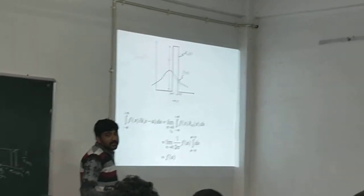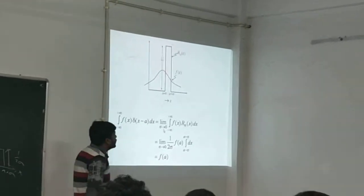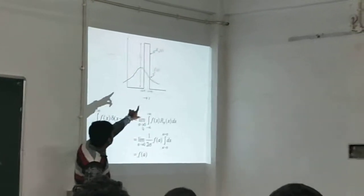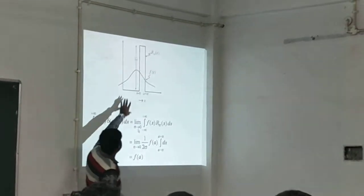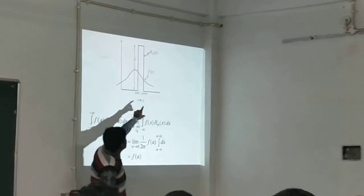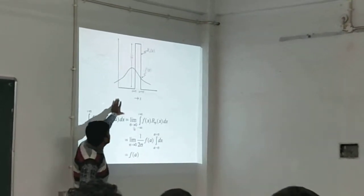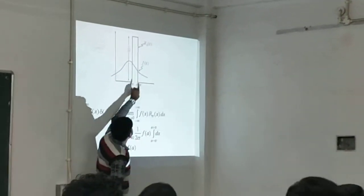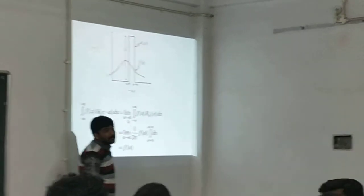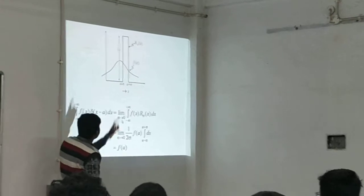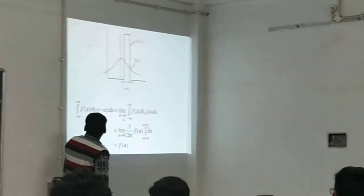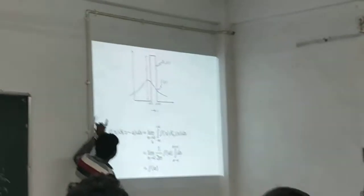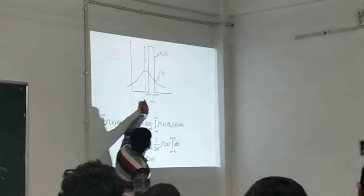Next, I want to define another property of the delta function. Here, I want to define an ordinary well-behaved function f of X. And the delta function is delta sigma of X. Now, if you multiply f of X and delta sigma of X, then this product will be 0 everywhere outside the interval A minus sigma to A plus sigma, because when any factor is 0, the product is 0. The integration limit from minus infinity to plus infinity will be converted into A minus sigma to A plus sigma.